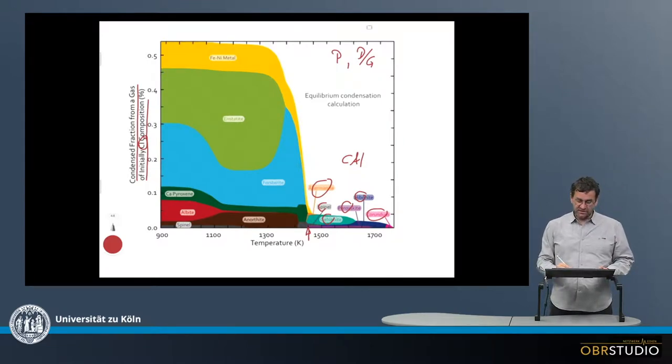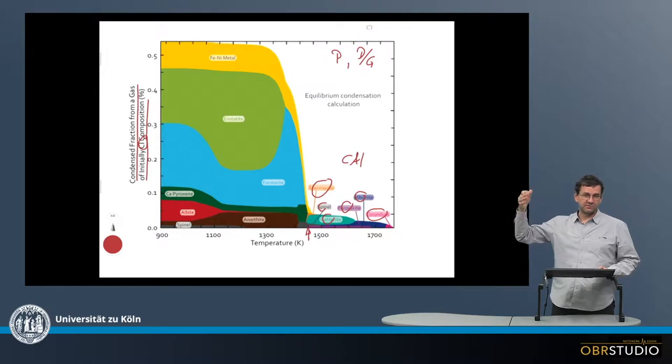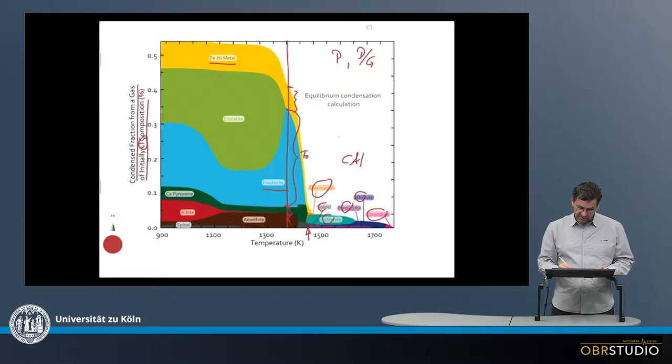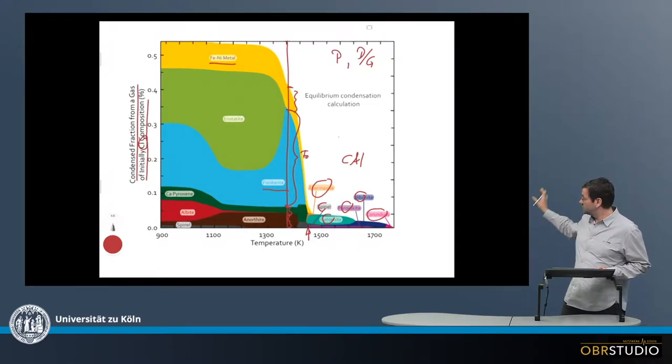So at about 1400 Kelvin at typical pressures of maybe something 100 Pascal or so in the nebula, the main elements start to condense. So first would be iron nickel metal, which is a lot. Then there's a lot of forsterite initially. Because how we read this plot is that we draw a line here, say for example here. And then at this temperature here, this is the amount of metal that is condensed. This here is the amount of forsterite that is condensed. This is the amount of pyroxene, and that's the amount of anorthite. So initially there's a lot of olivine, forsterite, that condenses.